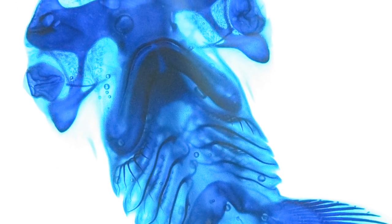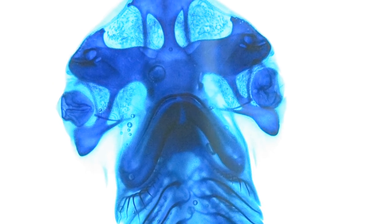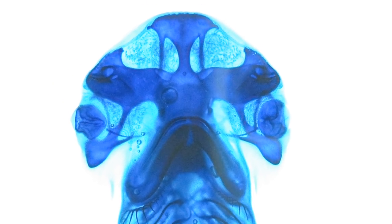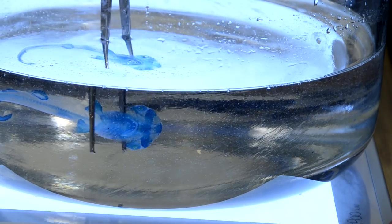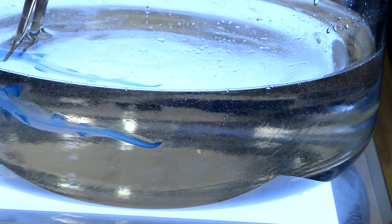But when we were looking at this head, especially in the cleared and stained animal when you circle it around in the glycerin, you don't really see the head tilting. The head kind of tracks really nicely flat.